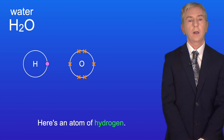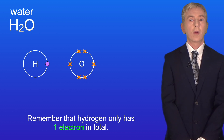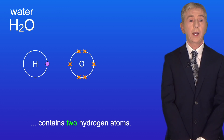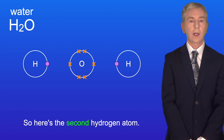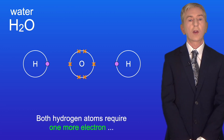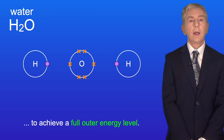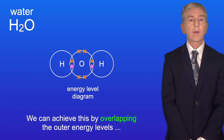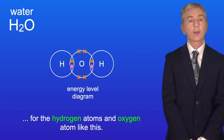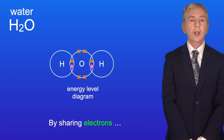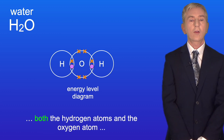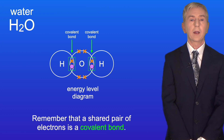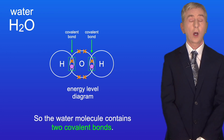Here's an atom of hydrogen, and remember that hydrogen only has one electron in total. The formula for water tells us that the water molecule contains two hydrogen atoms, so here's the second hydrogen atom. Both hydrogen atoms require one more electron to achieve a full outer energy level. However, the oxygen atom requires two more electrons. We can achieve this by overlapping the outer energy levels for the hydrogen atoms and oxygen atom. By sharing electrons, both the hydrogen atoms and the oxygen atom have a full outer energy level. Remember that a shared pair of electrons is a covalent bond, so the water molecule contains two covalent bonds.